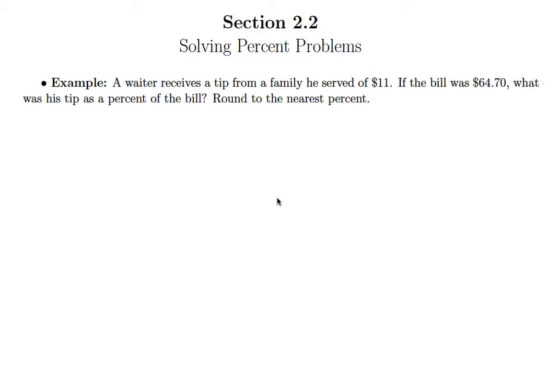In this lesson, we're going to look at an application problem where the skills we learned in the previous videos should help us. It says a waiter receives a tip from a family he served of $11. If the bill was $64.70, what was his tip as a percent of the bill? Round to the nearest percent.